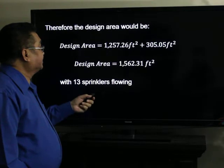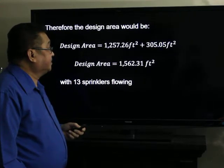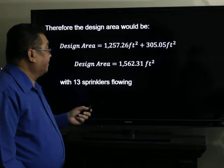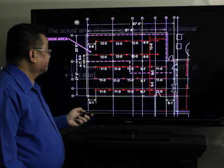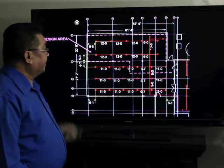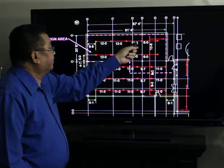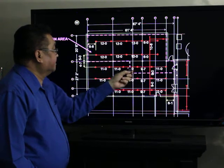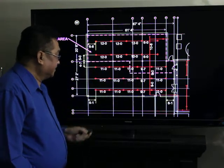1,257.26 plus 305.05 square feet is equal to 1,562.31 square feet. And how many sprinklers are there flowing? 1, 2, 3, 4, 5, 6, 7, 8, 9, 10, 11, 12, 13, with 13 sprinklers flowing.